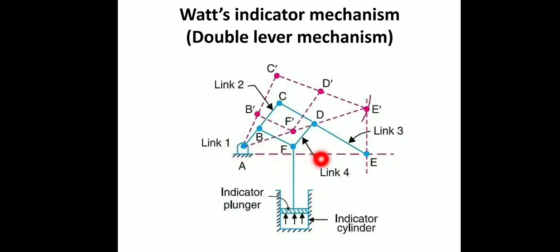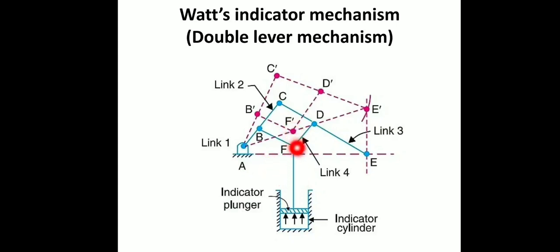Link 1 is the fixed link. Link 2, link 3, and link 4 are the moving links. When there is motion, the link in the middle traces a straight line. That straight line motion is the key feature — it moves to produce the Watt indicator mechanism, also known as the double lever mechanism.